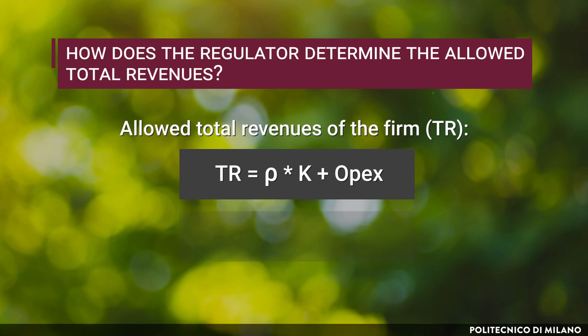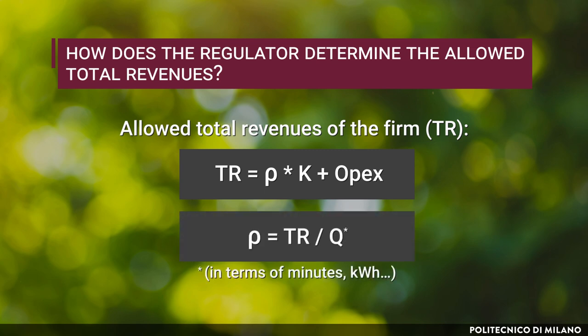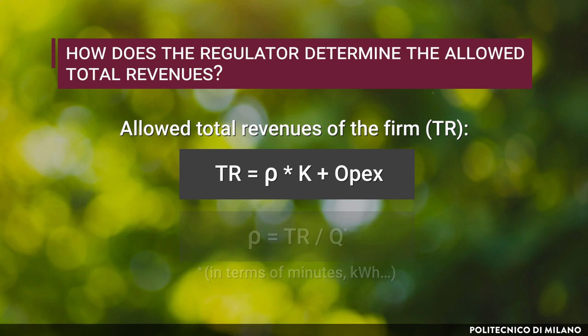The regulated unit price is the value of the total allowed revenues divided by the total quantity of goods or services provided, expressed in terms of minutes, kilowatt per hour, etc.